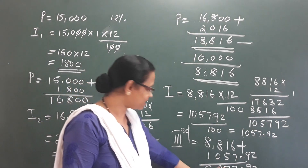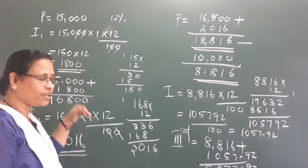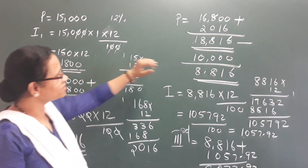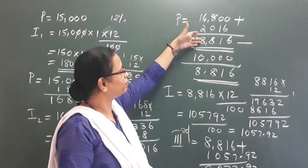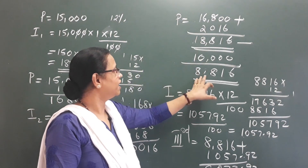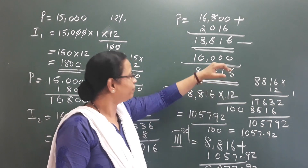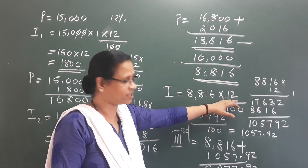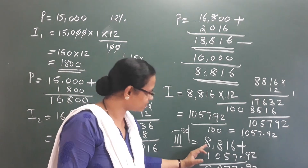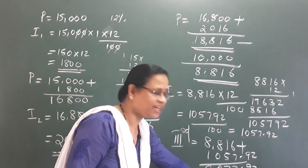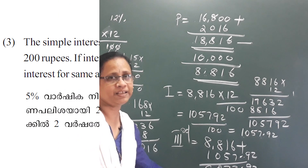What we are doing is: we add the interest in the first year to the principal. In the second year, after paying 10,000 the remaining balance is 8,816. We then calculate the third year interest on that amount and pay the final settlement. Is that clear?